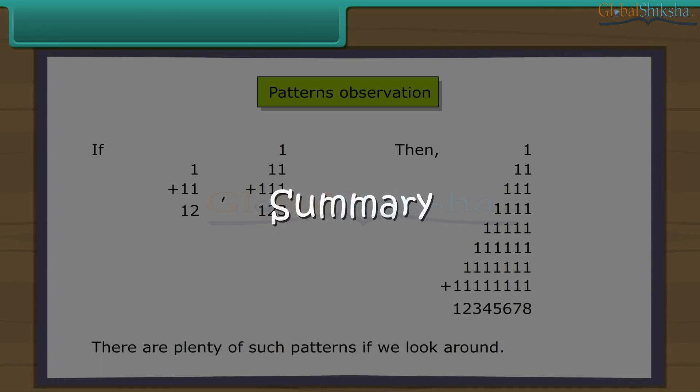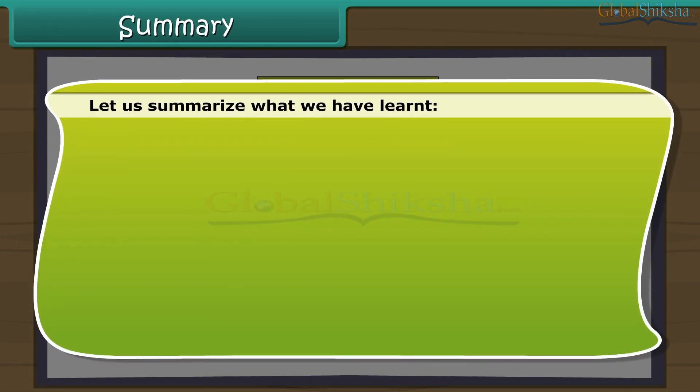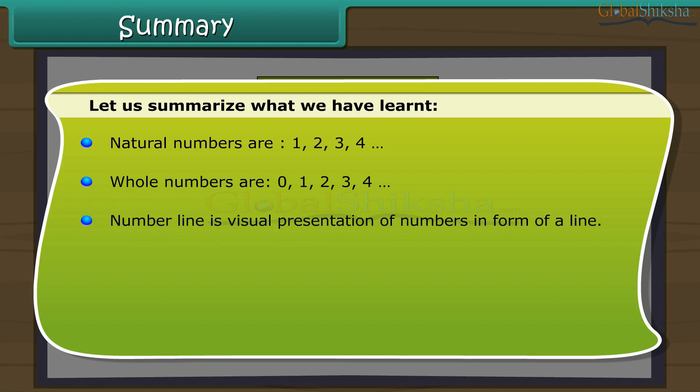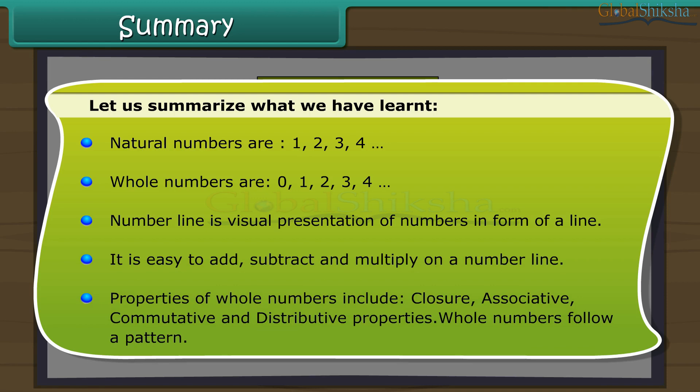Summary. Let us summarize what we have learnt. Natural numbers are 1, 2, 3, 4. Whole numbers are 0, 1, 2, 3, 4. Number line is visual presentation of numbers in form of a line. It is easy to add, subtract and multiply on a number line. Properties of whole numbers include closure, associative, commutative and distributive properties. Whole numbers follow a pattern.